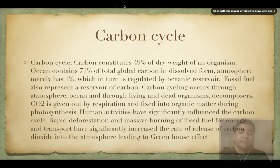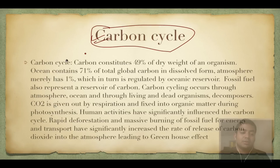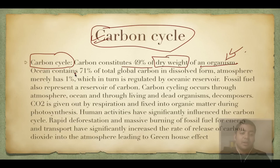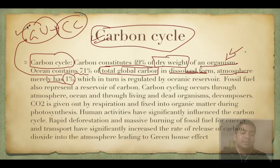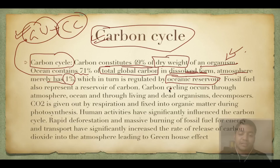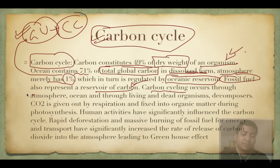Moving to the carbon cycle: carbon constitutes 49 percent of the dry weight of an organism, which is why it is important. The ocean contains 71 percent of total global carbon in dissolved form, but does not act as a reservoir. The atmosphere has merely one percent, but that is the critical one because it leads to global warming and climate change. Atmospheric carbon is regulated by the oceanic reservoir. Fossil fuel also represents a carbon reservoir, but the atmosphere is the most critical. The carbon cycle proceeds from atmosphere and ocean through living and dead organisms and finally decomposers.